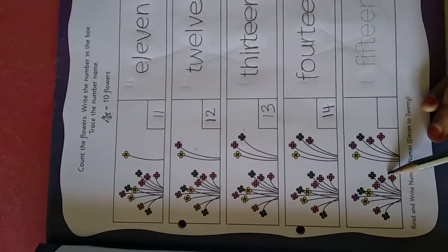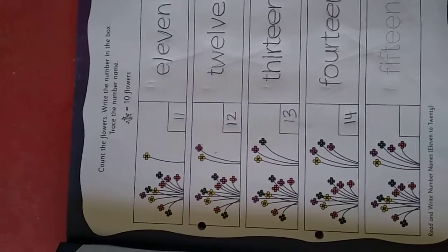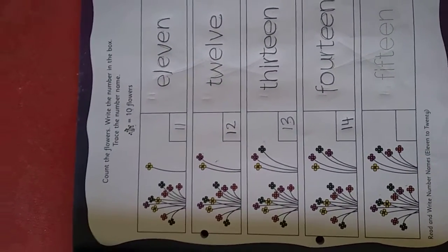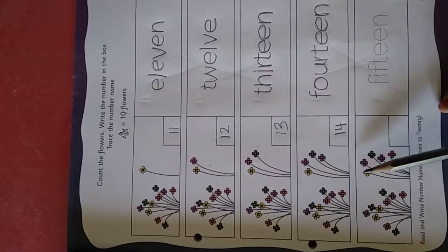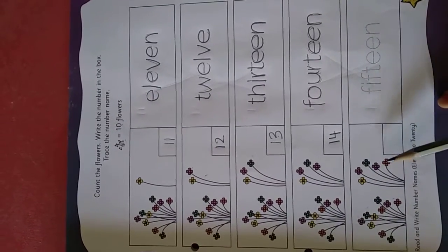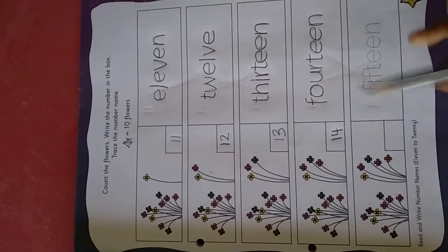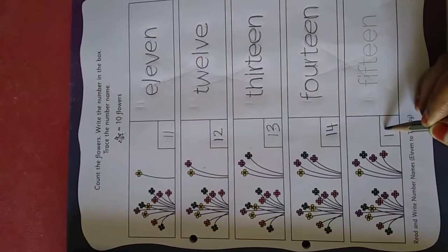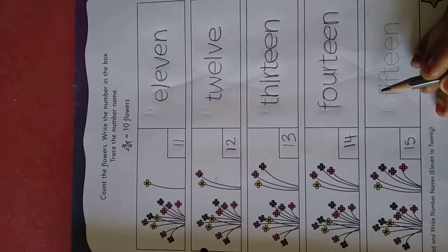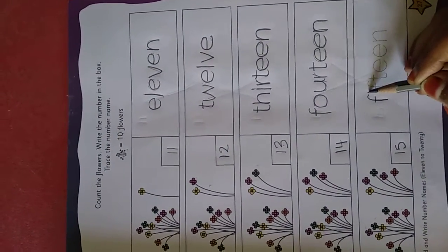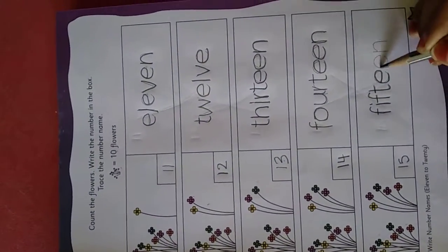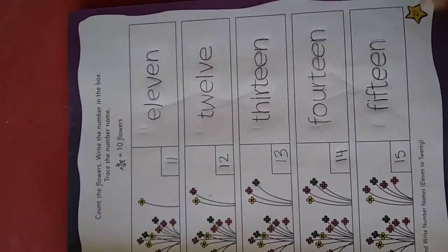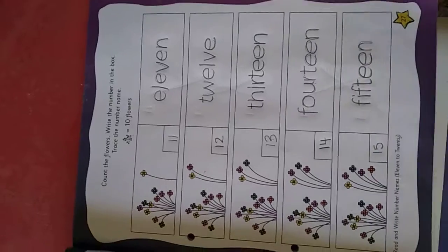So come to the last box. Here again one bunch of flowers and some more extra flowers are there. In one bunch of flowers how many flowers are there? Totally 10. So 10, 11, 12, 13, 14, 15. So totally how many flowers are there? 15. Write 15 here, and trace the 15. F-I-F-T-E-E-N. 15. Okay children, so we have completed page 27 activity.